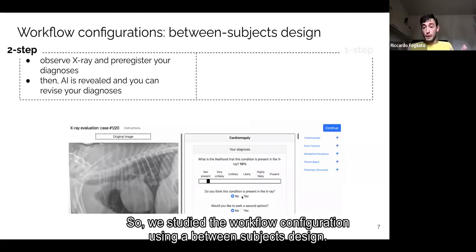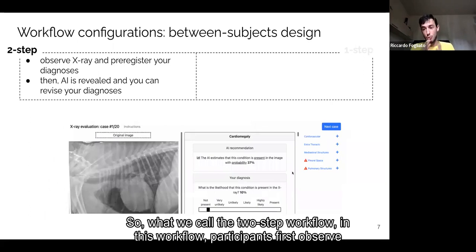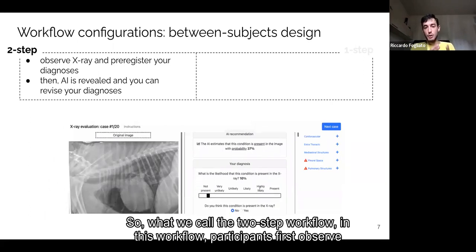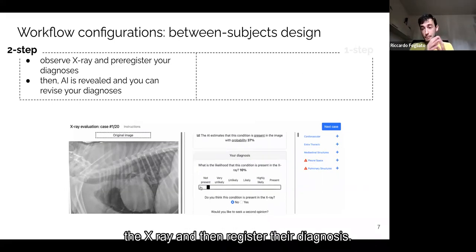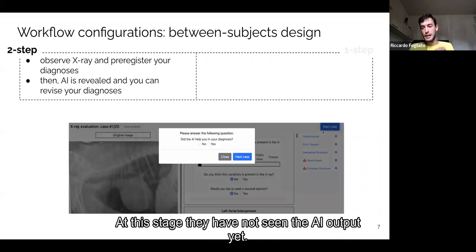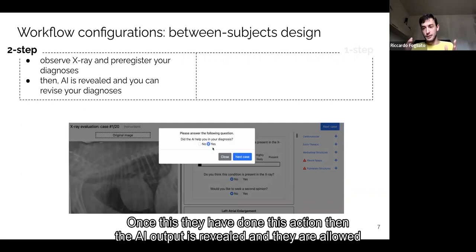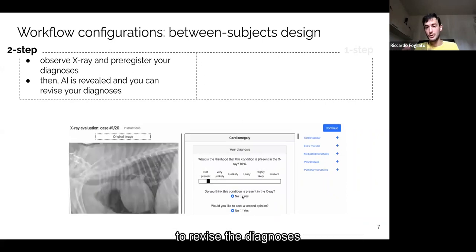So we studied the workflow configurations through a between-subject design. And what are these workflows? So what we call the two-step workflow. In this workflow, participants first observe the x-ray and pre-register the diagnosis. At this stage, they have not seen the AI output yet. Once they have done this action, then the AI output is revealed, and they are allowed to revise their diagnosis.